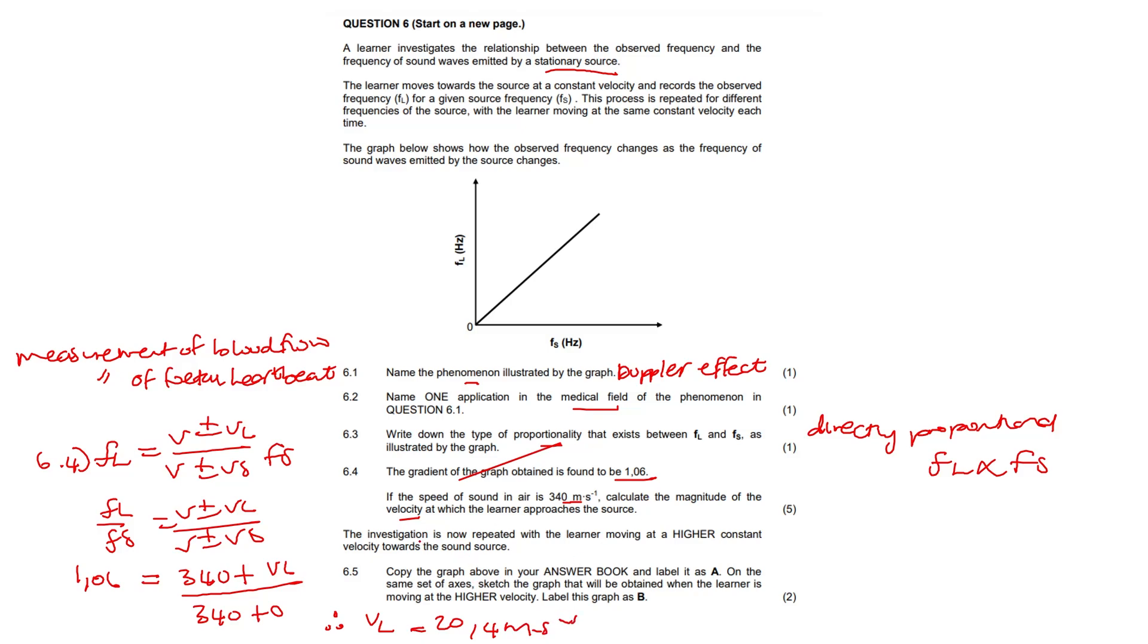Then the investigation is now repeated with the learner moving at a higher constant velocity towards the sound source. We've got to copy this graph in our answer book and label it as A. So this will be our A. Then they ask us on the same axis to sketch the graph that will be obtained when the learner moves at that higher velocity. So it's literally just going to be a line that is higher than A, and you'll label it B.